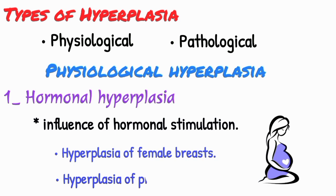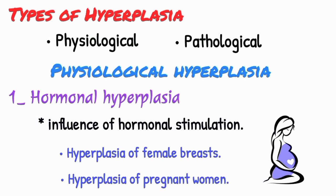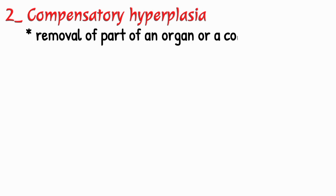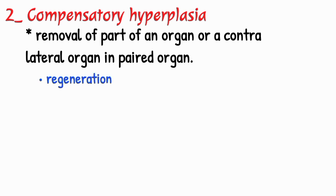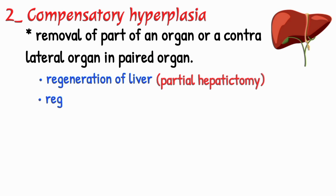And hyperplasia of the uterus in pregnant women. Second is compensatory hyperplasia, which occurs following the removal of part of an organ or a contralateral organ. For example, regeneration of liver following partial hepatectomy, and regeneration of epidermis after skin abrasion.